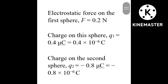Writing down the given quantities: electrostatic force F = 0.2 newton. Charge q1 = 0.4 microcoulomb = 0.4×10⁻⁶ coulomb, since 1 microcoulomb = 10⁻⁶ coulomb. Charge q2 = −0.8 microcoulomb = −0.8×10⁻⁶ coulomb.